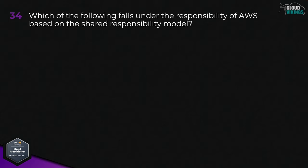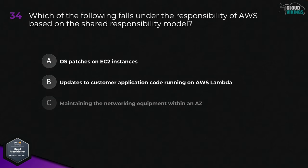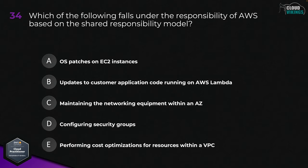Question thirty-four: which of the following falls under the responsibility of AWS based on the shared responsibility model? Options are: A, OS patches on EC2 instances; B, updates to customer application code running on AWS Lambda; C, maintaining the network equipment within an AZ; D, configuring security groups; or E, performing cost optimizations for resources within a VPC. The correct answer is C, maintaining the networking equipment within an AZ.